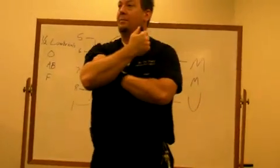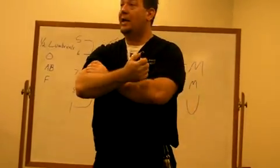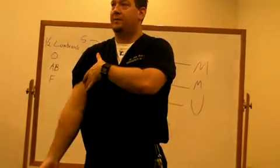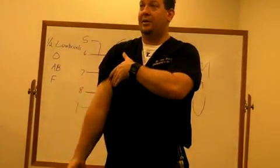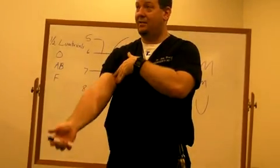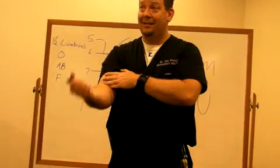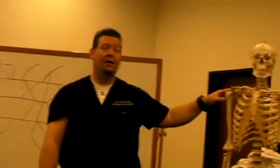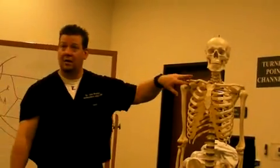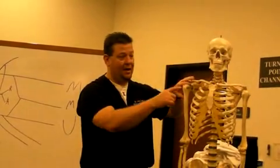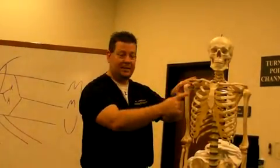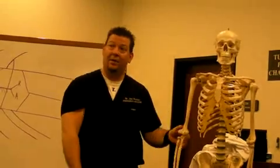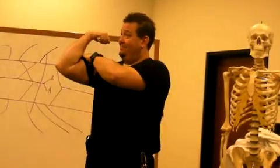On the upper arm, the biceps brachii muscle, the brachialis muscle, and the coracobrachialis, they all cause flexion of the shoulder. Actually, biceps brachii and coracobrachialis cause flexion of the shoulder. And then flexion of the elbow is brachialis and biceps brachii. Biceps brachii from the supraglenoid tubercle of the scapula and the short head from the coracoid process to the radial tuberosity of the radius. I'm going to make everybody do this. You grab your muscle and you make a muscle. Make it nice.